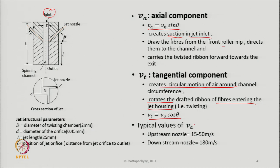Typical values of the axial velocity Va of air passing through the central channel: upstream the nozzle it is around 15 to 50 meters per second, and downstream the nozzle it can reach around 180 meters per second. These values will differ depending on the air pressure, the inclination angle, and the diameter of the jet nozzles — all of them have some influence.